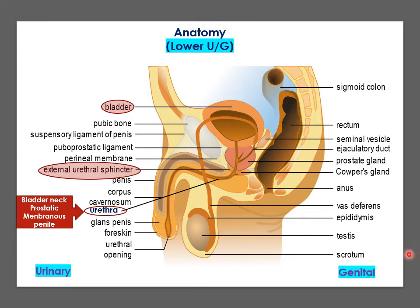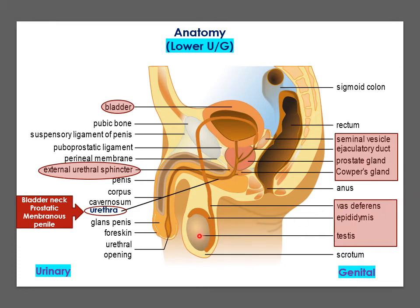On the right side are the structures involved in the genital system. The first group includes the seminal vesicles, ejaculatory ducts, prostate gland, and Cowper's gland. The second group consists of the testis, epididymis, and vas deferens, which carry sperm from the testis to be secreted into the prostatic urethra.